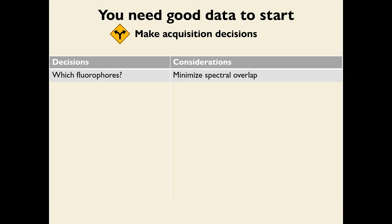Before you can do any co-localization analysis, you need good data. You need to make decisions about how to acquire that data. The first consideration is which fluorophores to use — the main concern is minimizing spectral overlap. You can't have fluorophores that overlap a lot because you won't be able to tell them apart, and you might conclude they're co-localizing when actually one fluorophore is bleeding into the detection of the other.